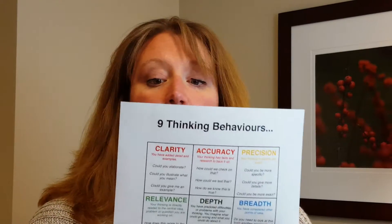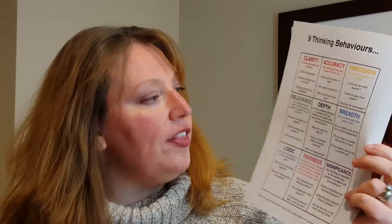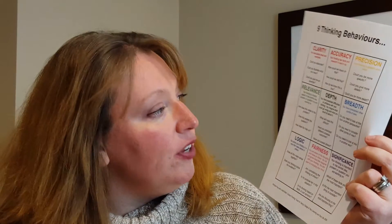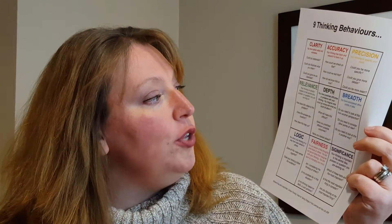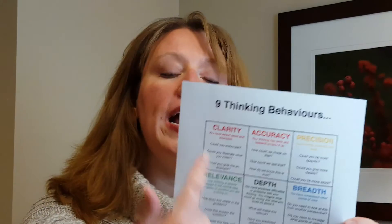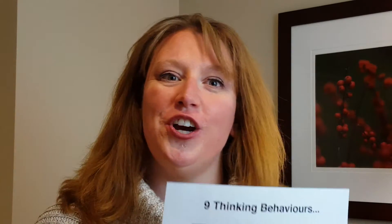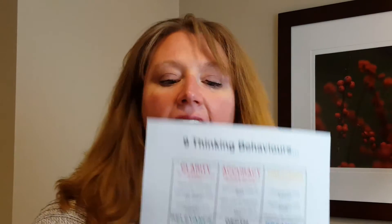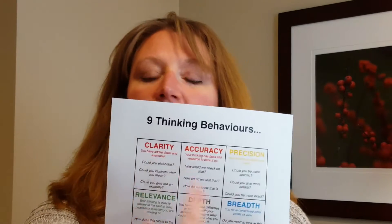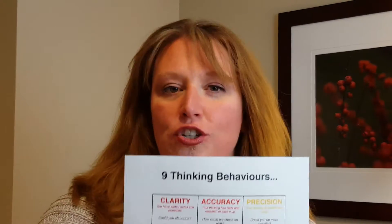For instance, are they working in clarity — so you have added detail and examples — or are they working more in depth? So you have predicted difficulties or problems with your thinking, you imagine what could go wrong and what you could do about it. We're identifying, as you're thinking through a problem or through a composition in your artwork, where are you stumbling and what thinking behavior could you use to overcome that struggle?